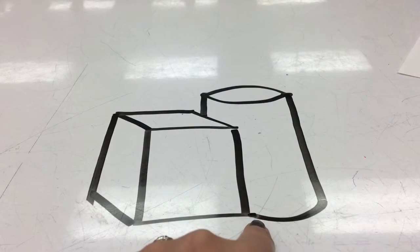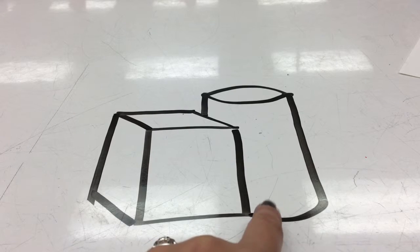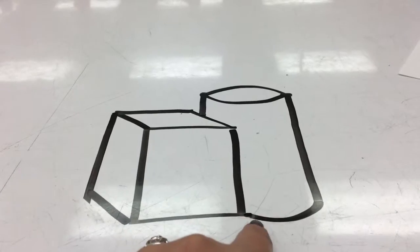This curved line is what tricks our brain into believing that this is a round, three-dimensional object, instead of a flat rectangle. Here's the difference.